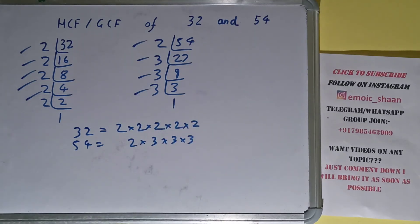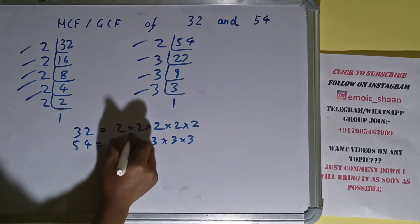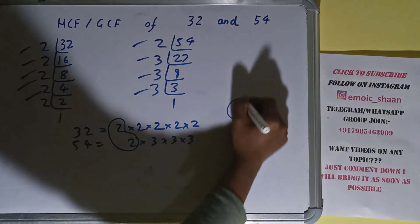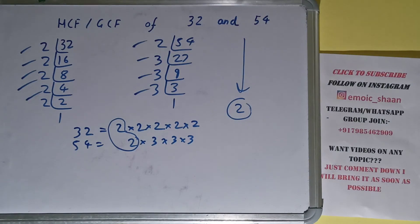The next thing we need to do is circle out the common prime factors. So we have only one common prime factor, that is 2. So the answer will be 2. So we can see that the HCF or the GCF of the numbers 32 and 54 is 2.